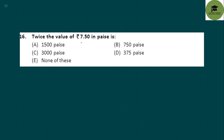Twice the value of rupees 7.50 in paisa: Rs 7.50 equals 750 paisa. Twice of 750 paisa is 750 × 2 = 1500 paisa. Option A is your correct answer.